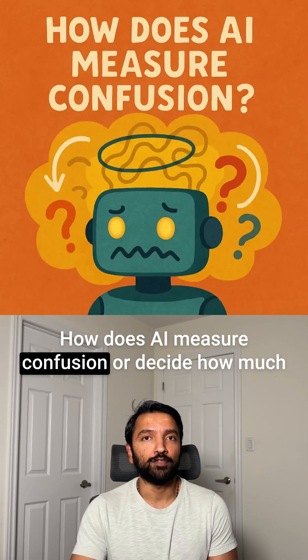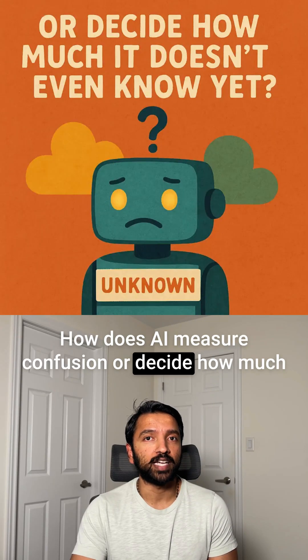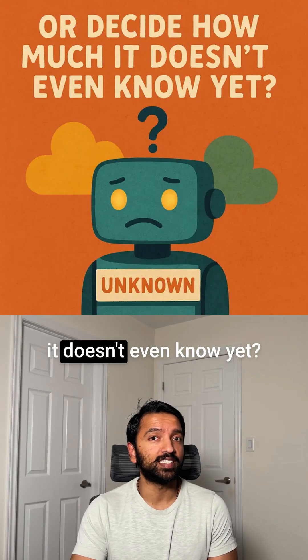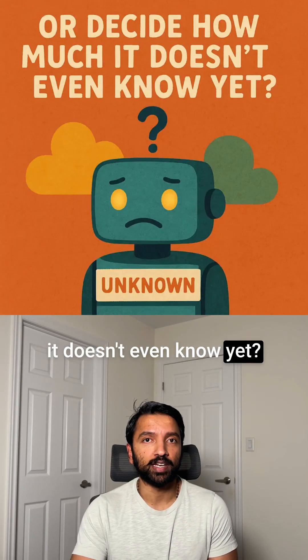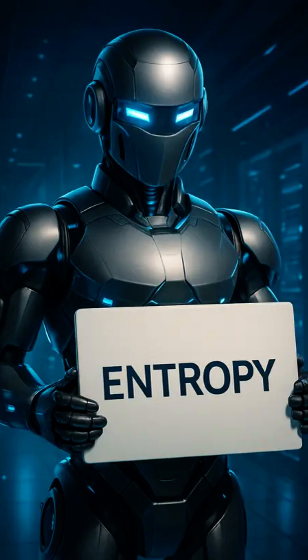How does AI measure confusion, or decide how much it doesn't even know yet? The answer is entropy.